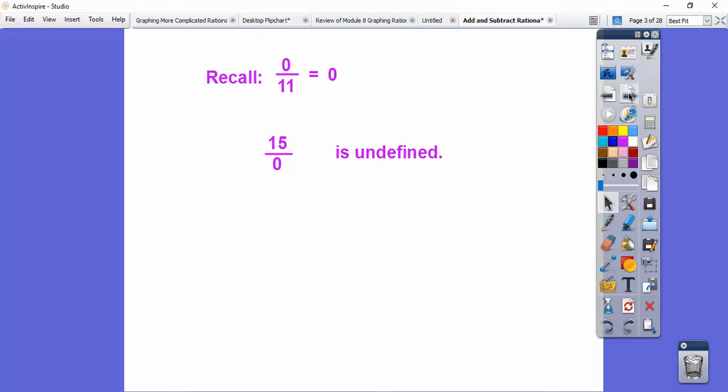Before we get started, I just want to do a reminder: zero is on top of a number equals zero. And if a number is on top of zero, it's undefined. And how do I remember that is I think of it like a little ball holding up a table and the ball won't hold up a table, it'll fall over. So zero's on the bottom, that's the undefined one. Zero's on top, then it equals zero.